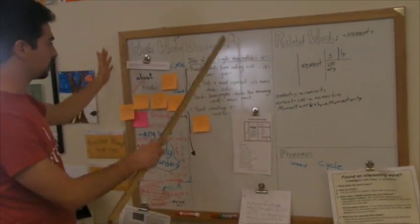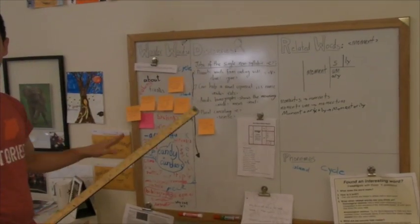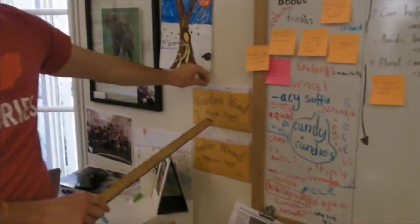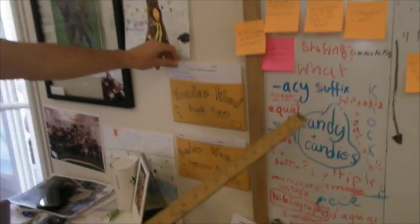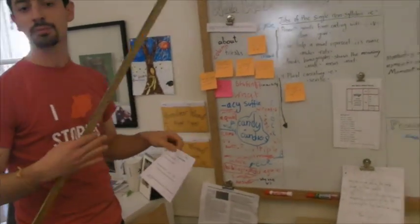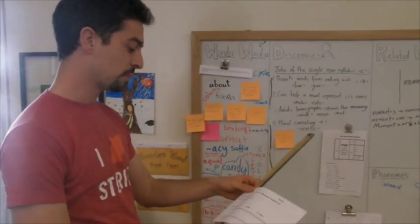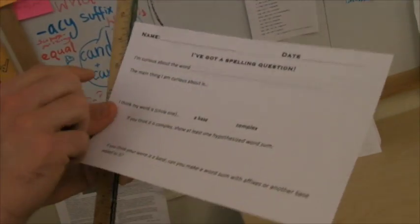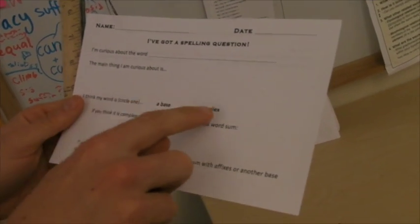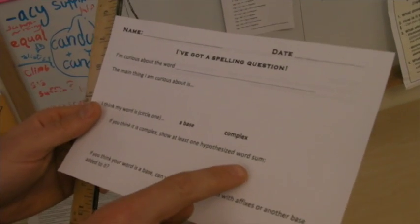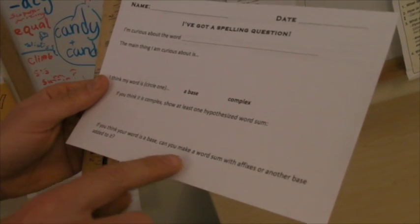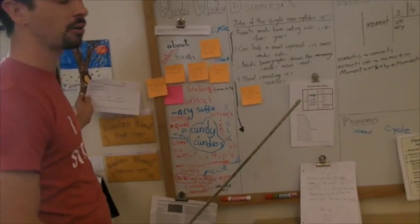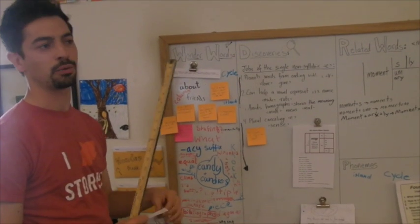So I would probably split this into wonder words and discoveries. And one thing that we did that Pete helped us out with was with the wonder words - we have wonder word forms now. So if they put a word on the wonder word wall, there's a form they fill out and it asks them to go a little deeper with their inquiry. It says, I'm curious about the word, the main thing I'm curious about is blank, I think my word is a base or complex. If you think it is complex, show at least one hypothesized word sum. If you think your word is a base, can you make a word sum with affixes or another base added to it?